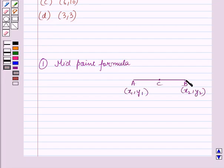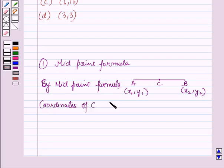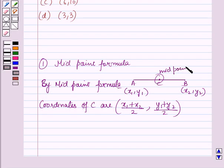If AB is a line segment with C as the midpoint of AB and the coordinates of A are (x1, y1), coordinates of B are (x2, y2), then by midpoint formula, coordinates of C are (x1 plus x2 by 2, y1 plus y2 by 2). Here C is the midpoint.